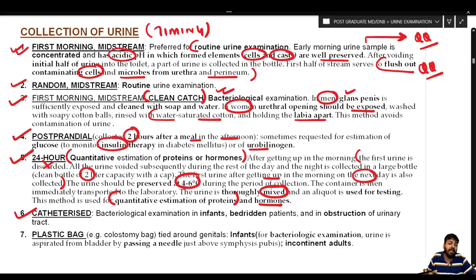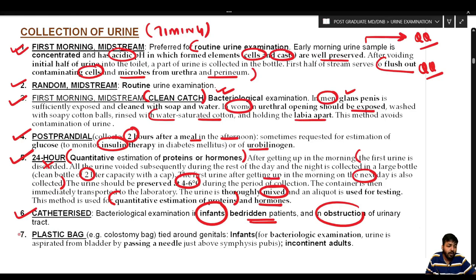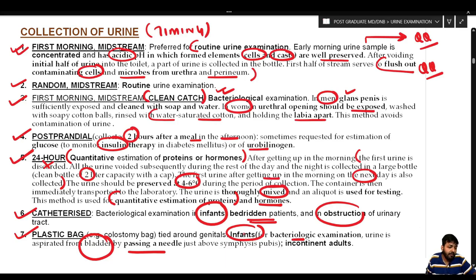A catheterized sample is used for bacteriological examination in infants, bedridden patients, or those with urinary tract obstruction. In infants, a specialized plastic bag is tied around the genitals for collection. Urine can also be collected directly from the bladder by passing a needle above the symphysis pubis (suprapubic aspiration), or a plastic bag may be used for incontinent adults.